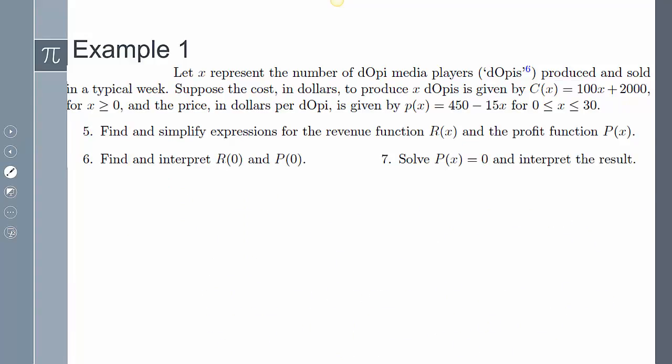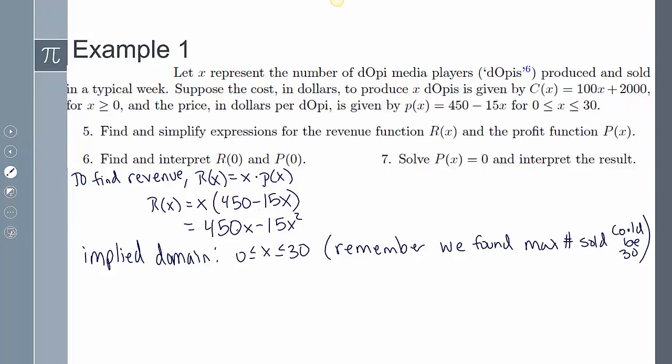Number five, it says find and simplify expressions for the revenue function R(x) and the profit function P(x). So to find my revenue, we say R(x) equals x times p(x). And so I get this value here. My implied domain is the same. And remember, we already found what the number of max that could be sold and that could be 30.